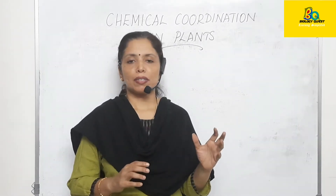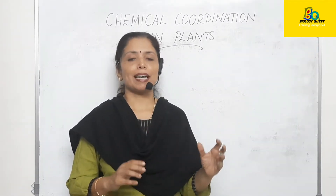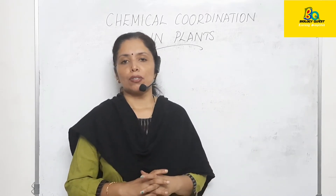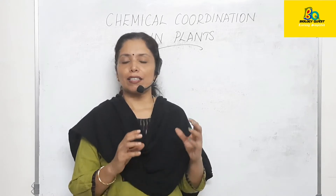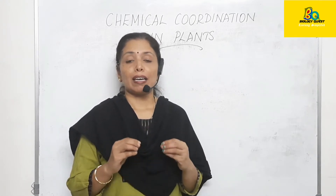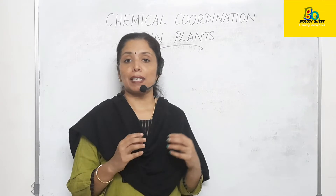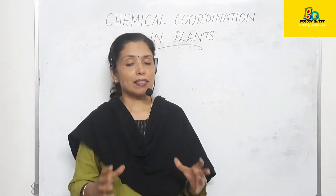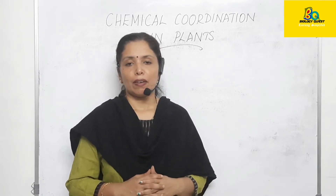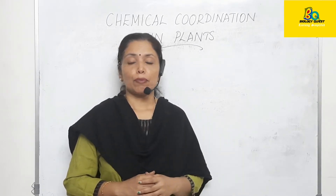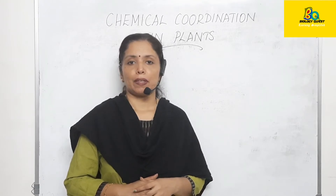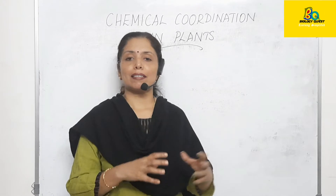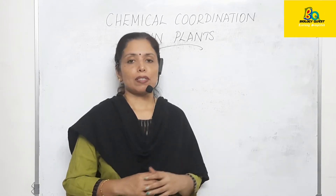Plants exhibit movement mainly in the form of growth. The responses shown by plants in the form of growth are not as fast as those taking place in animals, because in animals a nervous system is present. Whereas in plants a nervous system is absent. It is because of certain chemical coordination taking place inside plants that these responses occur.